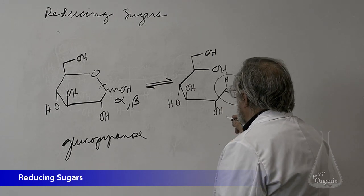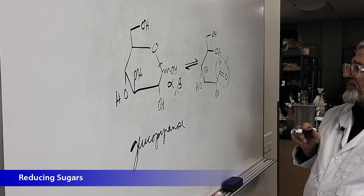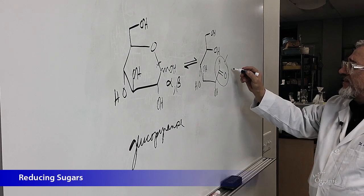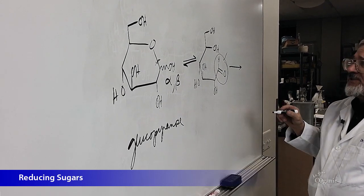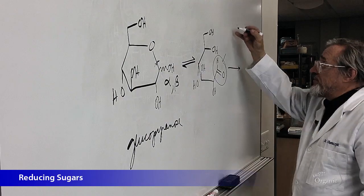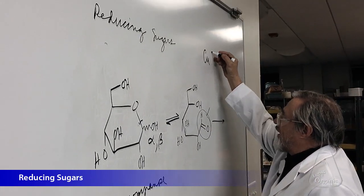So the idea that this is present in small quantities means that when we use our oxidizing agent, Benedict's solution, Benedict's solution, by the way, remember, is copper nitrate.